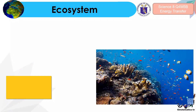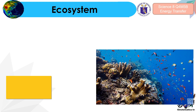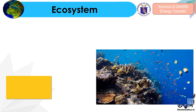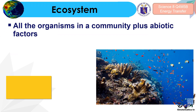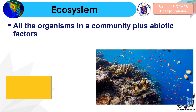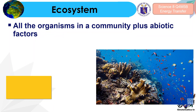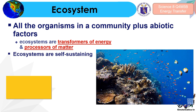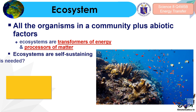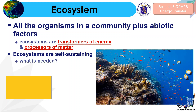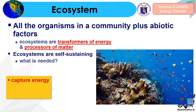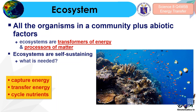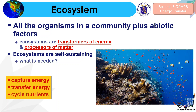To start with, let us define first what an ecosystem is. From your previous topics, you already know that an ecosystem is made up of organisms in a community plus the abiotic factors. Ecosystems are transformers of energy and processors of matter, and ecosystems are self-sustaining. What is needed for an ecosystem to be self-sustaining? Of course, the ecosystem needs to capture energy, there is also the transfer of energy, and lastly, the cycle of nutrients through the components of the ecosystem.